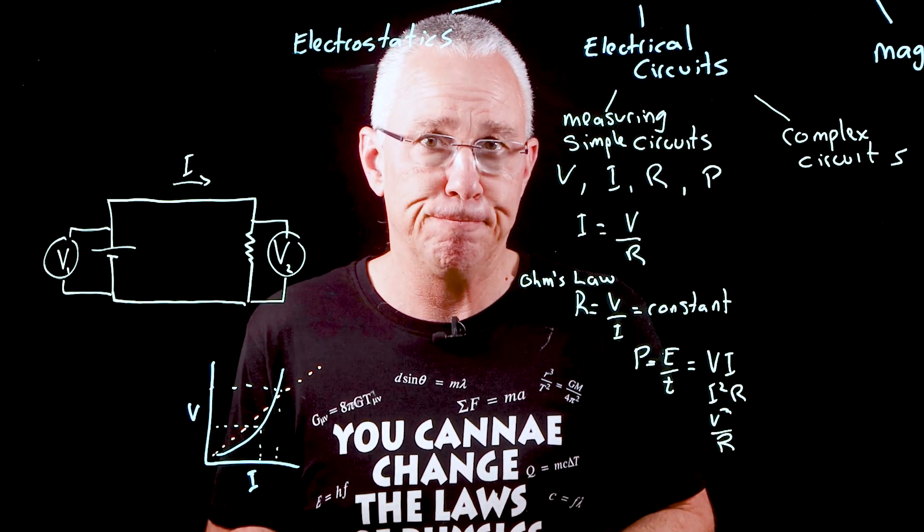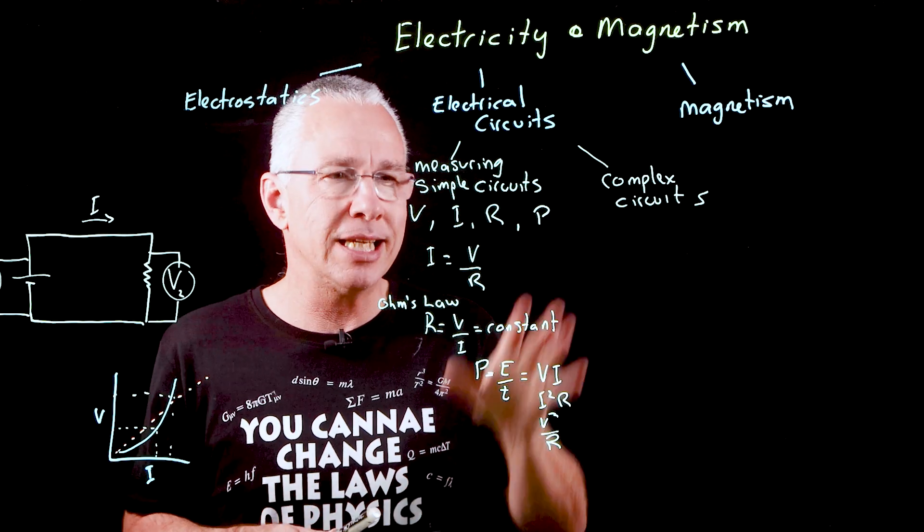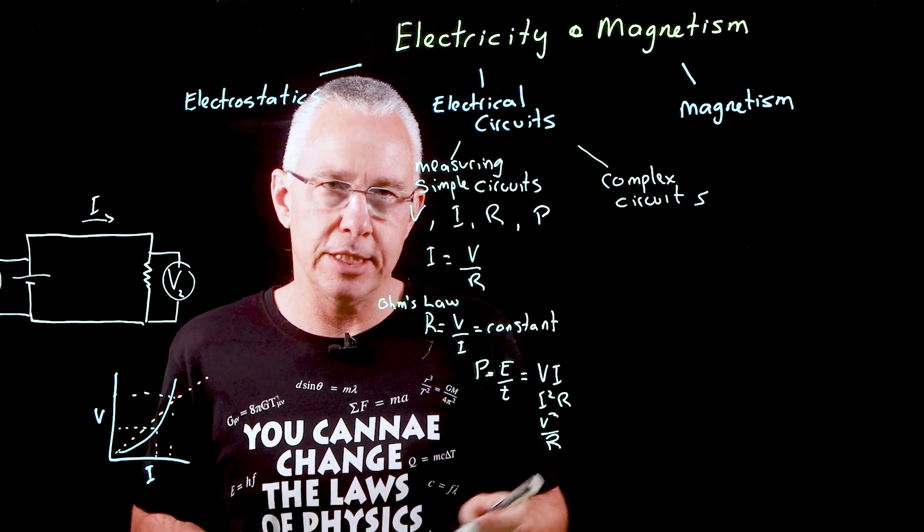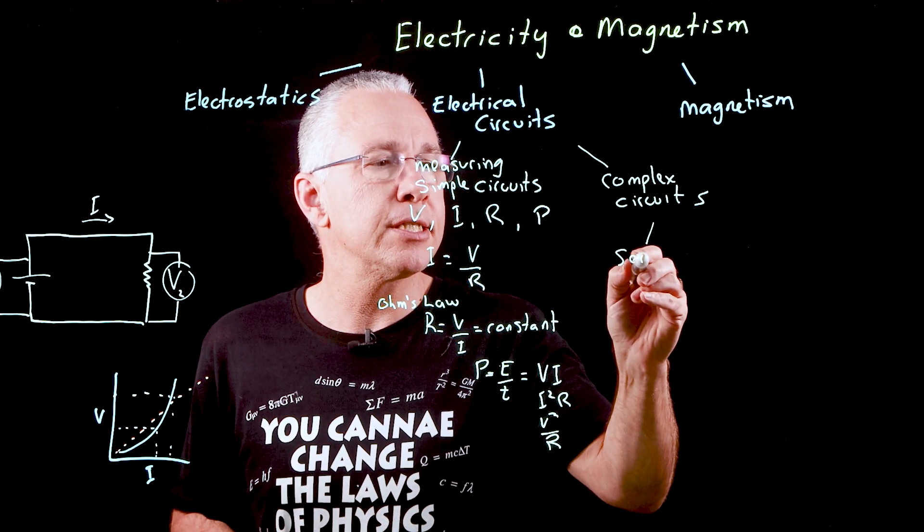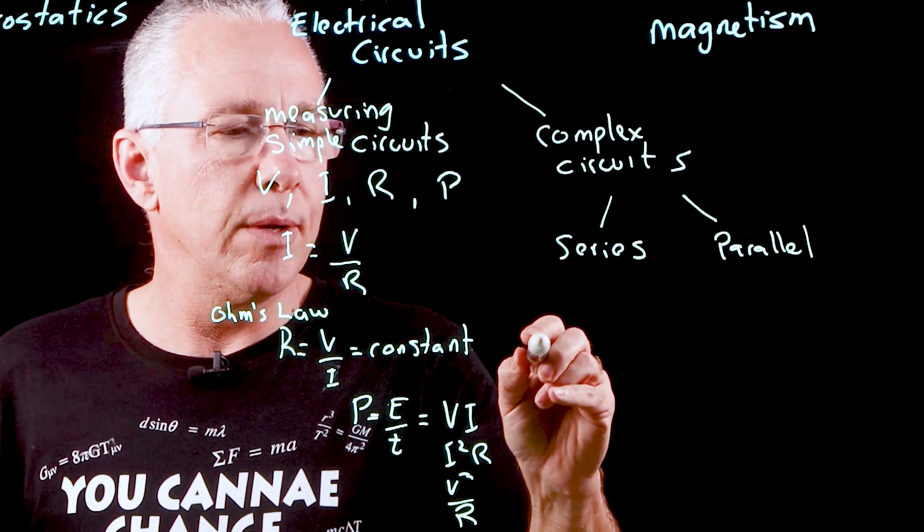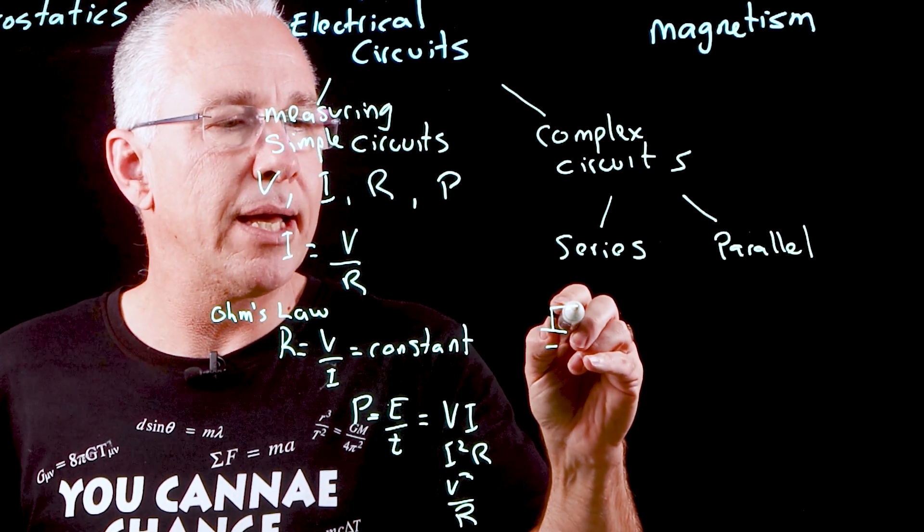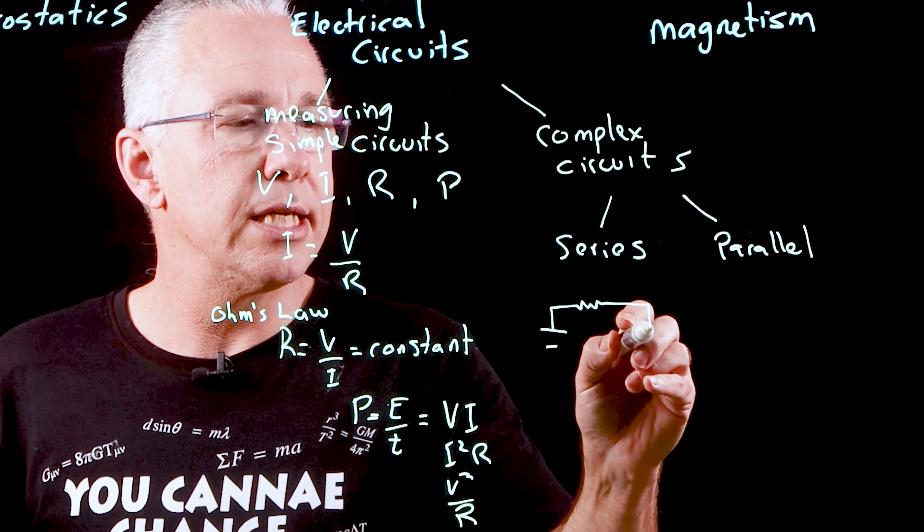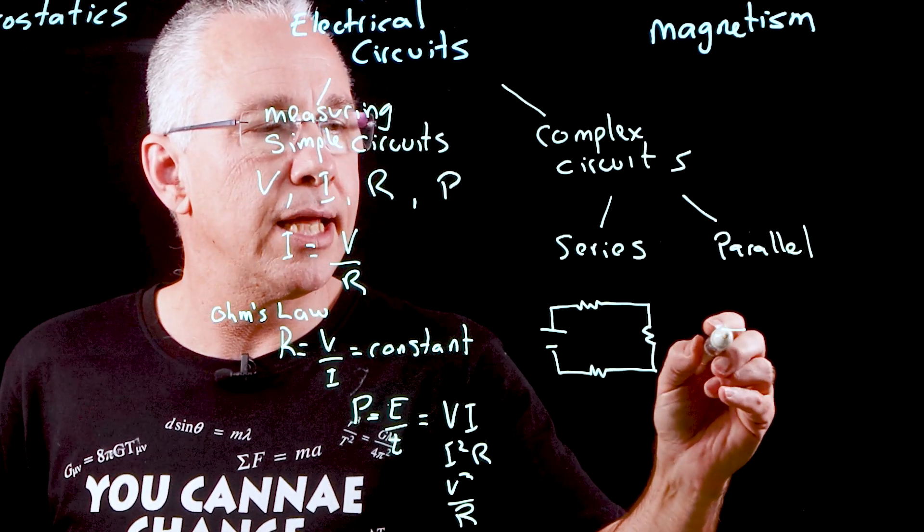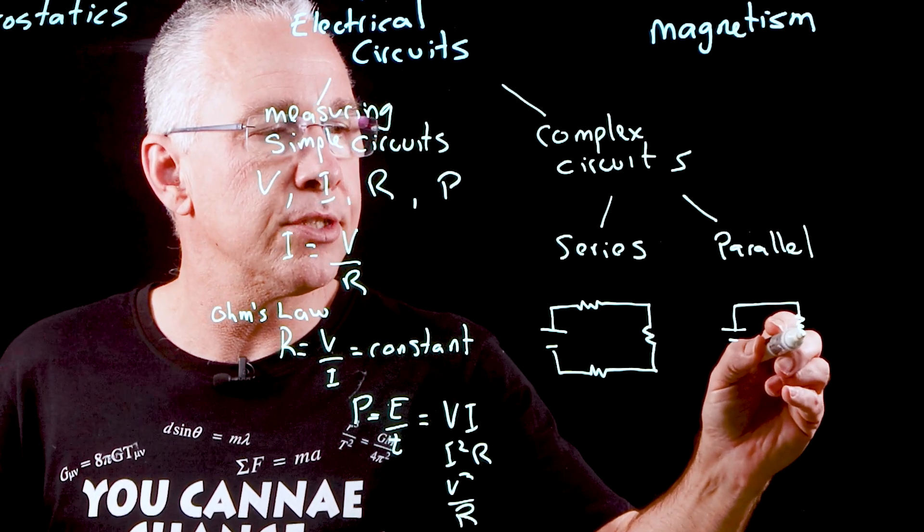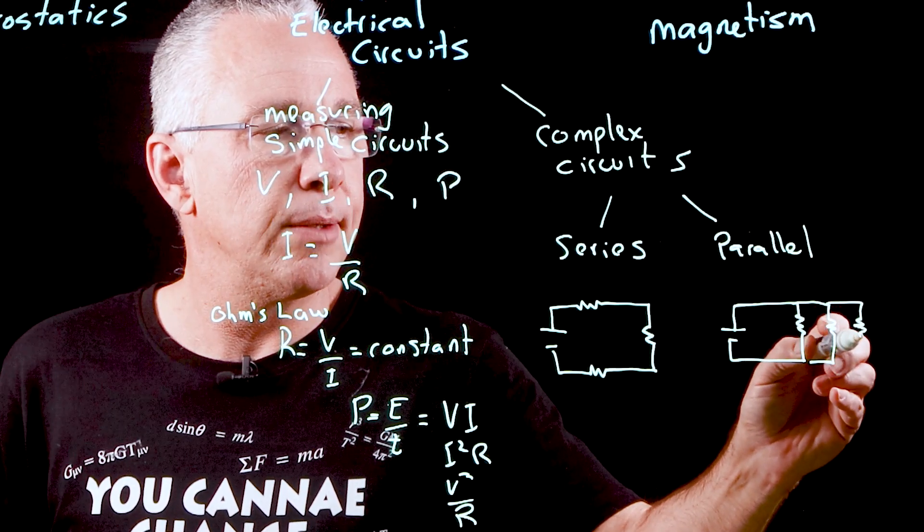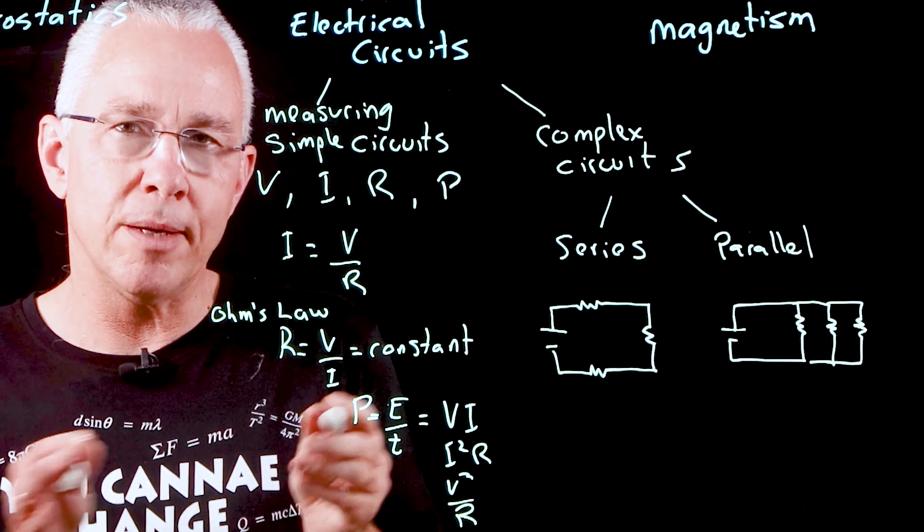We then move on to complex circuits—understanding these principles in two key types of circuits. First is our series circuits, and then we have parallel circuits. In our series circuit, we may have a voltage supply and then three resistances in series. I can also have a circuit where I have a resistance, and then in parallel I have another resistance and a third one.